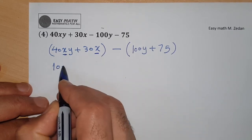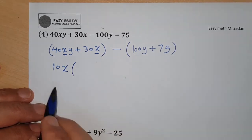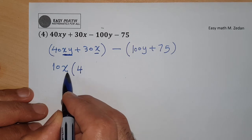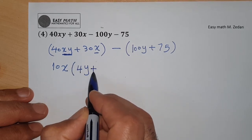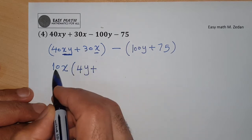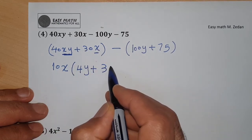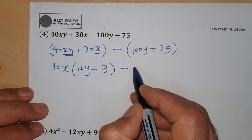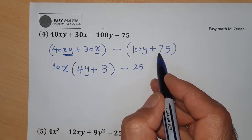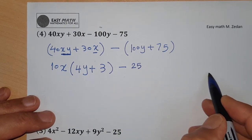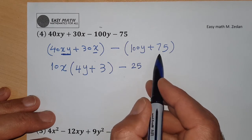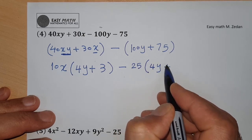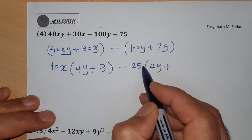Divide step by step: 40 divided by 10 is 4, xy divided by x is y. Plus 30 divided by 10 is 3, x over x is 1. So the first group gives 10x(4y + 3). For the second group, the highest common factor of 100 and 75 is 25. 100 divided by 25 is 4y, and 75 divided by 25 is 3.